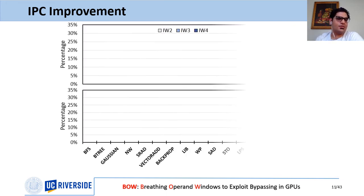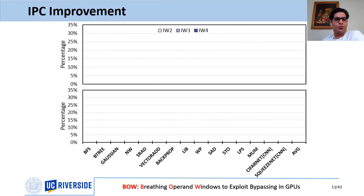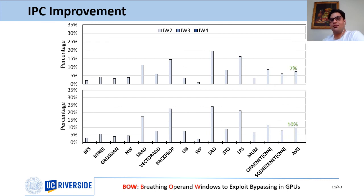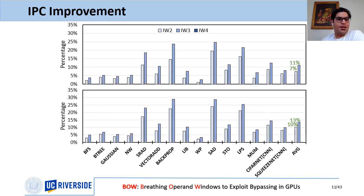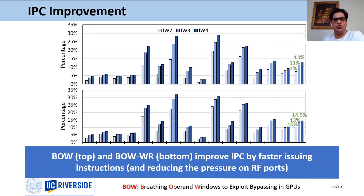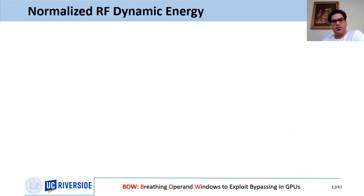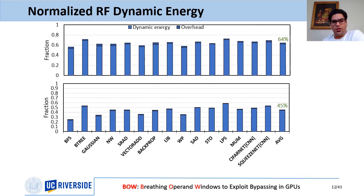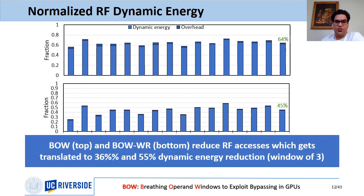In terms of IPC, BO and BOWR improved IPC by seven and ten percent respectively for a window size of two instructions. We can achieve even higher performance with wider instruction windows. This improvement comes from faster instruction issuing and reduced pressure on register file ports. In terms of register file dynamic energy, BO and BOWR substantially reduce register file accesses, translating to 36% and 55% dynamic energy reduction for a window of three instructions.